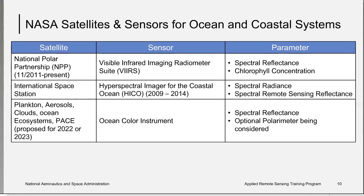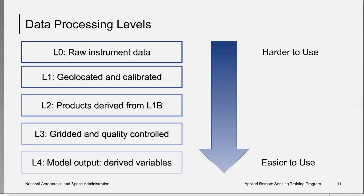This proposed hyperspectral sensor is scheduled to launch sometime in 2022 or 2023. We talked about data processing levels of the imagery you can obtain from satellite sensors. These processing levels go from level zero, the rawest form, to level four, which can include model output and derived variables. Level zero data requires the most skill and effort to process. Working with lower-level data and processing it through several levels permits the user to apply customizations not possible when obtaining data already processed to a higher level.